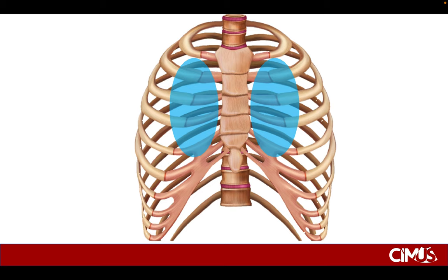If you're scanning where X is and find no presence of pneumothorax, your findings really only apply to that site. The bottom line is: the more areas you screen and scan, the more confident you are about your findings. In a supine patient, we should be scanning from the clavicle down to the liver on the right-hand side and clavicle down to the heart on the left-hand side.